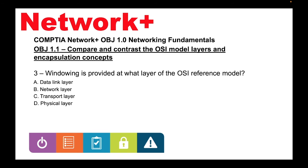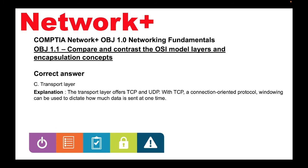Question 3: Windowing is provided at what layer of the OSI reference model? A. Data link layer, B. Network layer, C. Transport layer, D. Physical layer. The correct answer is C, Transport layer. The transport layer offers TCP and UDP. With TCP, a connection-oriented protocol, windowing can be used to dictate how much data is sent at one time.